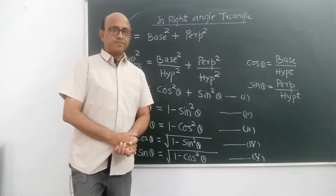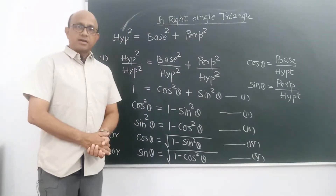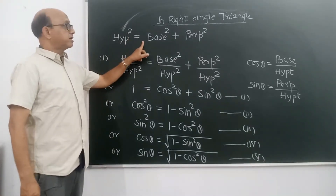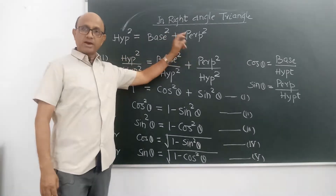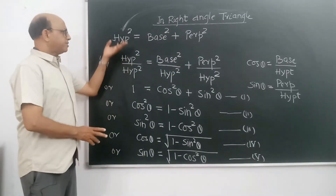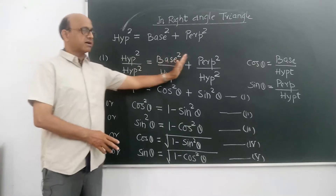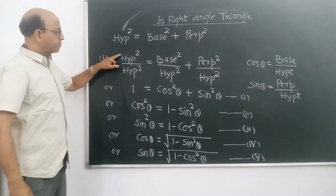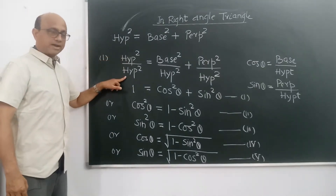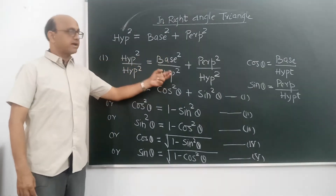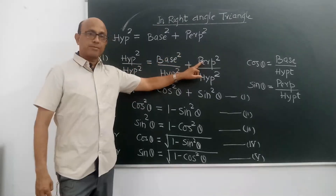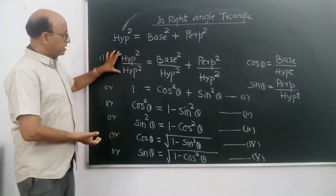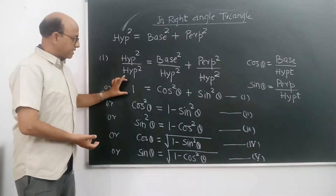In a right angle triangle, hypotenuse square is always equal to base square plus perpendicular square. Ab is equation ko agar hum hypotenuse se divide kar dein dono side LHS aur RHS, to hypotenuse square upon hypotenuse square, base square upon hypotenuse square, aur perpendicular square upon hypotenuse square likhenge. Isse hypotenuse square cancel hokar 1 aa jaayega.